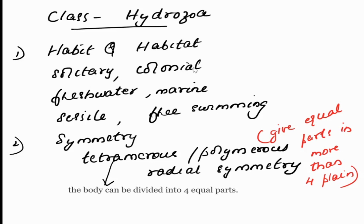The first point is whether it is found single or as a group. The next is whether it is present in salt water or freshwater. The third is about its existence — whether it is freely moving or seen attached to some substrate.